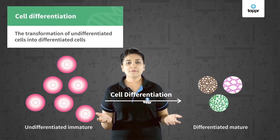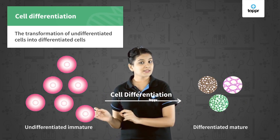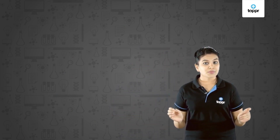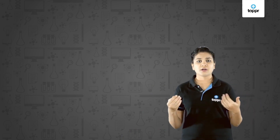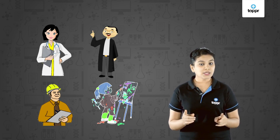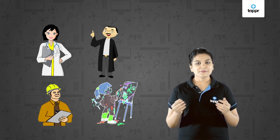Cell differentiation is simply the transformation of undifferentiated cells into differentiated cells. For example, when children become matured, they get a specific job — they become either a doctor, a lawyer, an engineer, or maybe an artist. Now they have a specific job and have become differentiated from each other, and this is what we call differentiation.